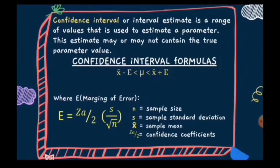A confidence interval, or interval estimate, is a range of values used to estimate a parameter. This interval contains the parameter, but since the parameter is unknown, we estimate the interval where the parameter lies. This estimate may or may not contain the true parameter value. The mean lies between the lower limit and upper limit: the lower limit equals the mean minus the margin of error, and the upper limit equals the mean plus the margin of error. The margin of error is the confidence coefficient times the standard deviation divided by the square root of the sample size.